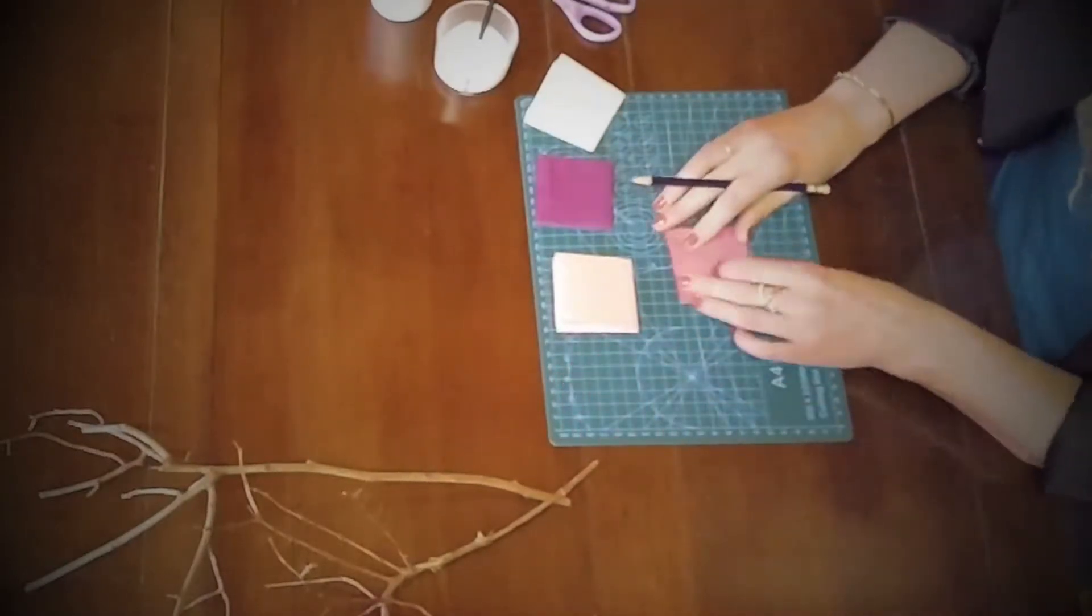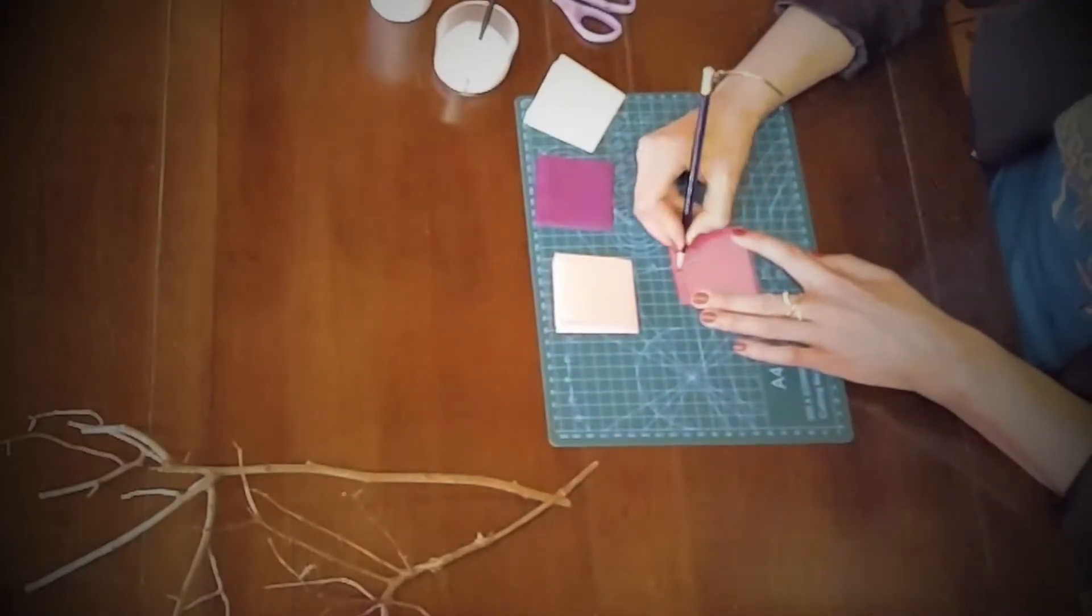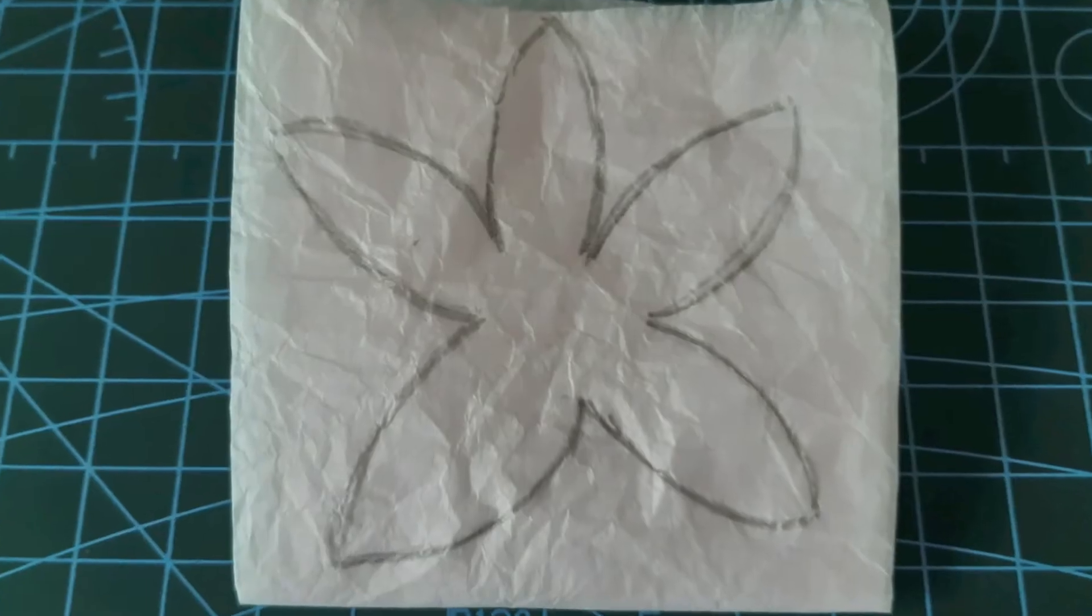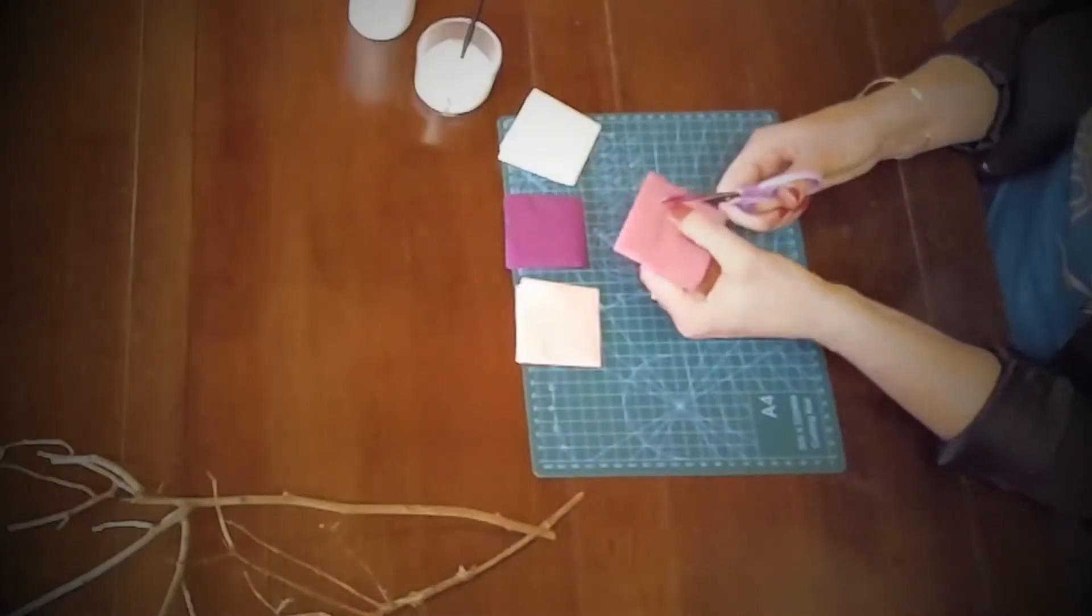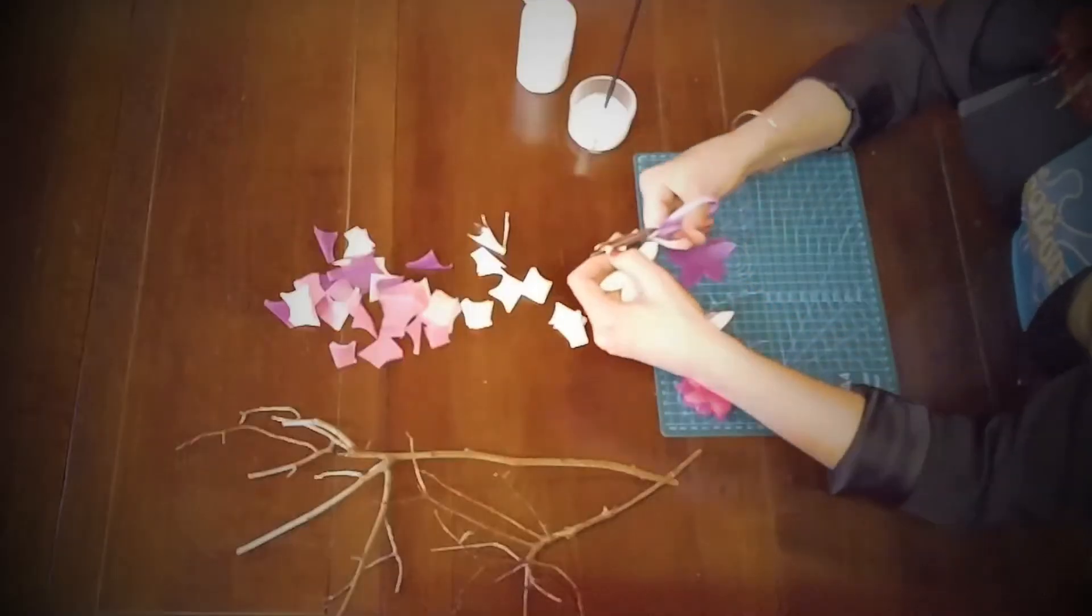Draw a five petal flower on each piece. It doesn't have to be even as this will add to the naturalistic look of the flower. Cut them out and you will now have piles of different colour flowers.